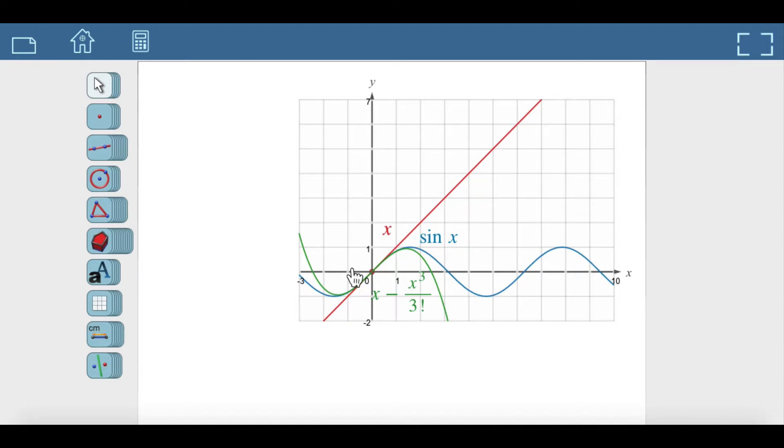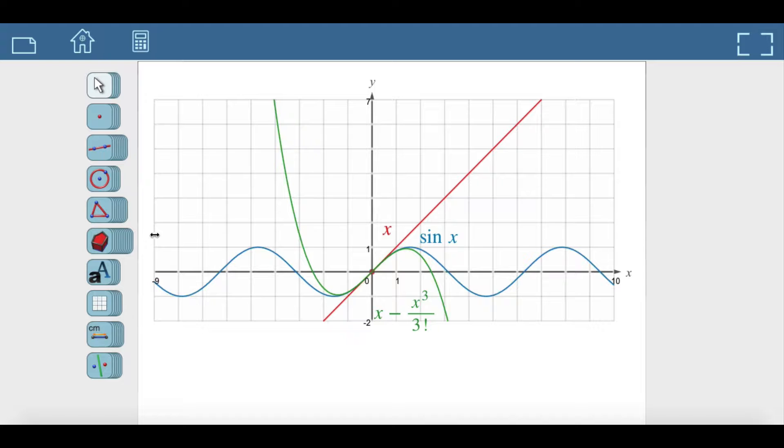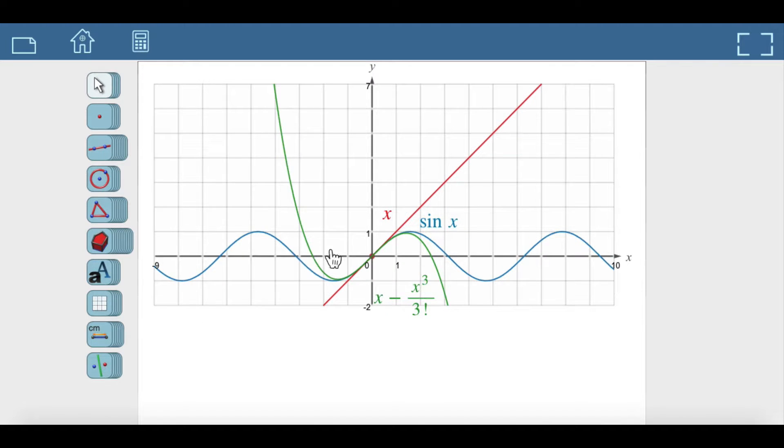Is it possible to do better and to find a Taylor polynomial which is a good approximation of the function on interval minus pi, pi?